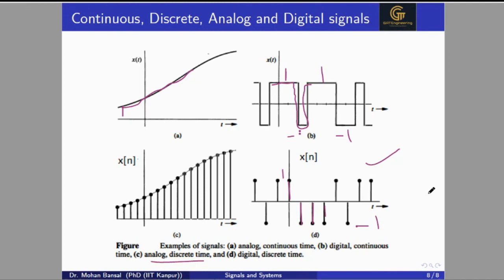In summary, in today's tutorial we covered continuous time signals, discrete time signals, analog signals, and digital signals. A continuous time signal is one where time is continuously varying and we can take any value at any time interval. In a discrete time signal, values are taken only at integer points on the time axis, such as n equal to 1, 2, 3. For analog and digital signals we look at the amplitude level: if amplitude is continuously varying it is analog; if the amplitude is discretized at two, three, or four levels, it is a digital signal.